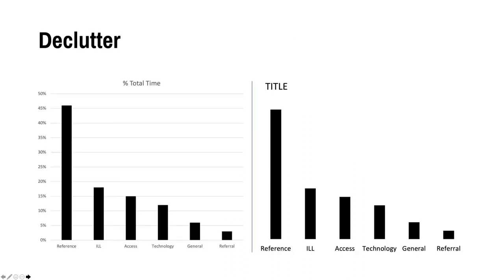First, declutter. Default charts are filled with things that are unnecessary — legends, axis labels, grid lines. Unless these things truly have a purpose in your chart, delete them. In the case of a simple bar chart like we have here, I don't need the grid lines. And as you can see, the axis labels only cause a reader to look back and forth, left to right, right to left, to figure out what the bar represents. We can fix this.